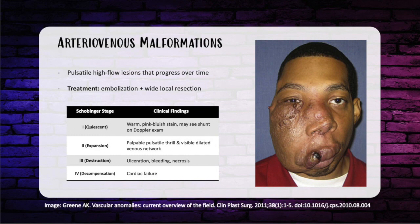AVMs are pulsatile, high-flow lesions that progress over time. MRI can help determine the extent. Treatment: embolize the arterial component first, then wide-local resect. Schobinger staging: Stage 1 — quiescent, warm pink-bluish stain with shunting on Doppler; Stage 2 — expansion with pulsatile thrill and dilated venous networks; Stage 3 — destructive, with ulceration, bleeding, and necrosis; Stage 4 — decompensation, including cardiac failure. That's it for AVMs.